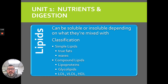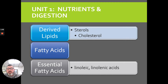Then you have LDL, VLDL, and HDL — low-density lipoproteins, very low-density lipoproteins, and high-density lipoproteins. Those are all fatty acids important in animal feeding and nutrition, and also in human nutrition, associated with cholesterol. When we talk about feeding lipids, whether they're derived fatty acids or essential fatty acids, they're important because of the energy density they provide.